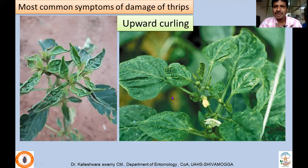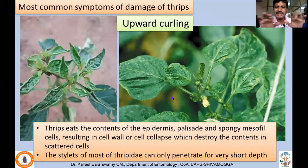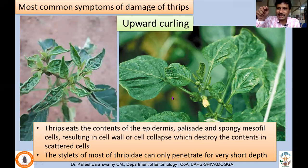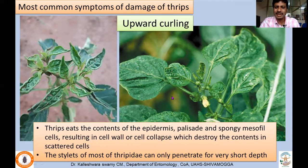The most common symptom of thrips feeding is upward curling. This occurs because thrips feed on epidermal cells, palisade cells, and spongy mesophyll cells. The feeding is scattered and cells get dried out since thrips stylets only penetrate to a very shallow depth — only a few species penetrate deeper. As a result, upward curling occurs.